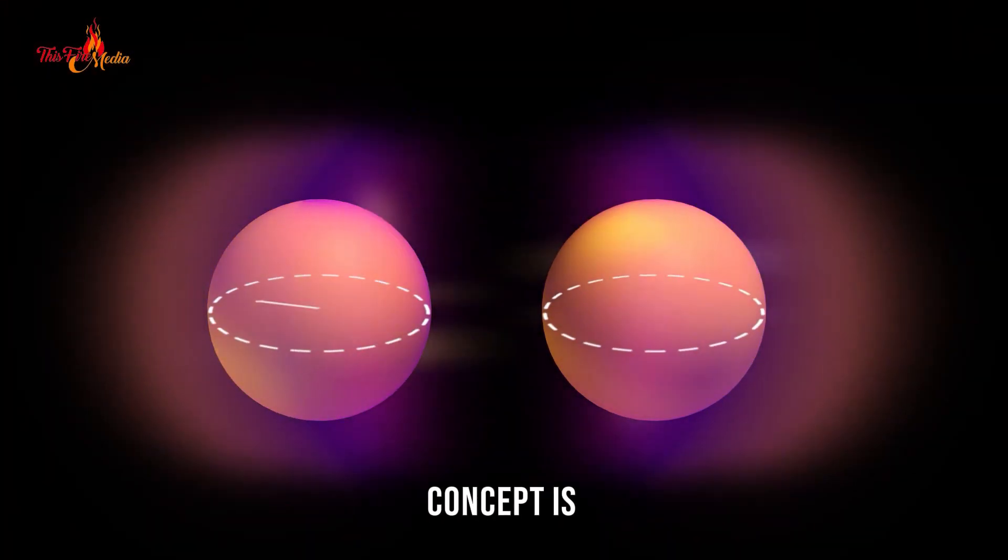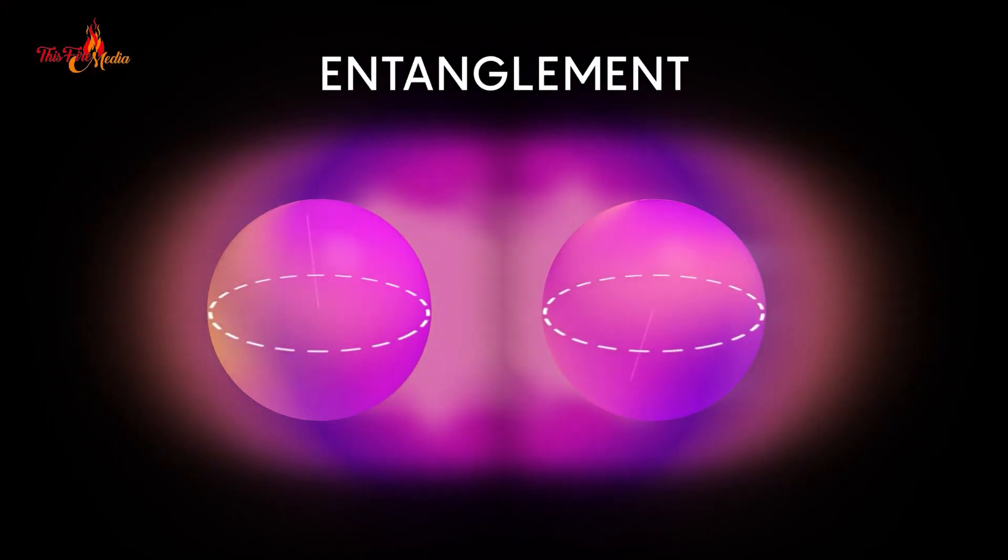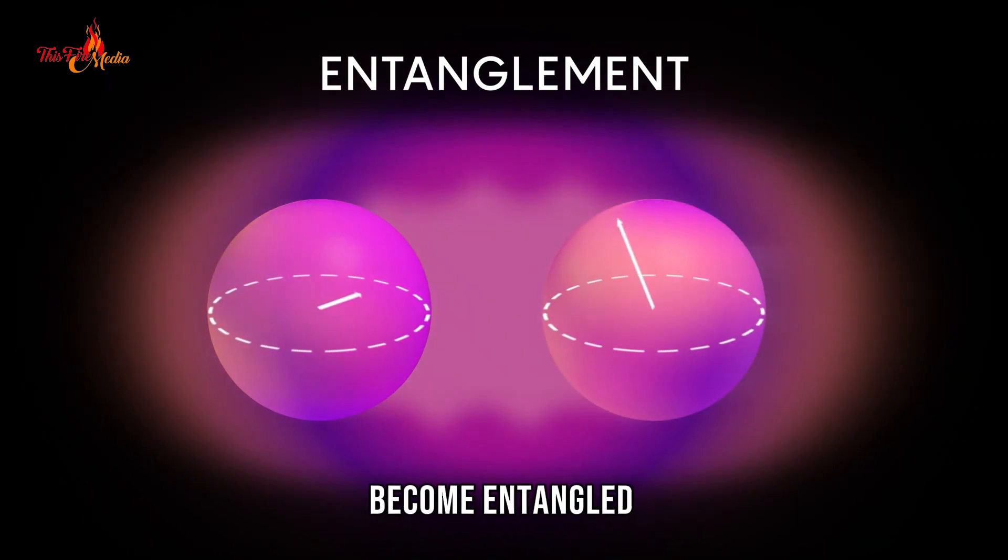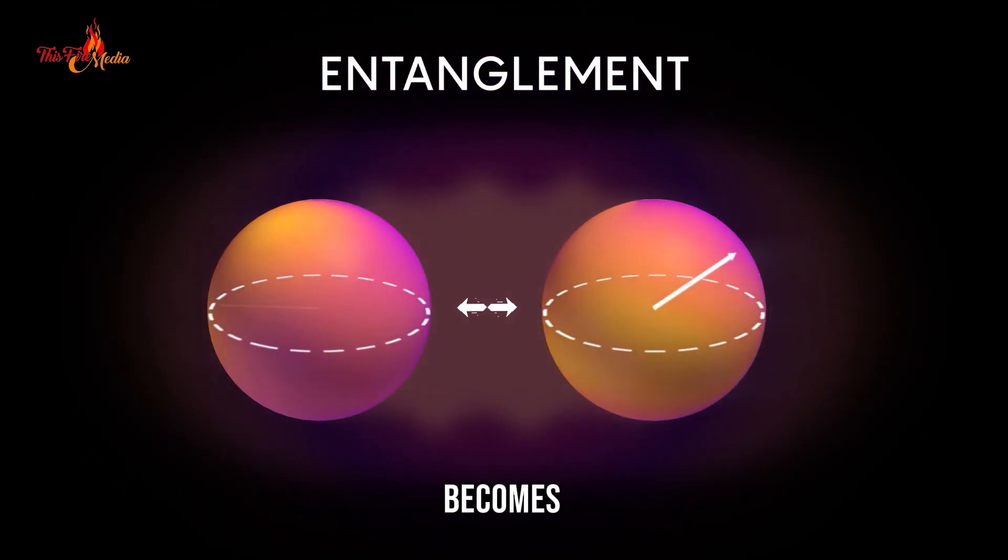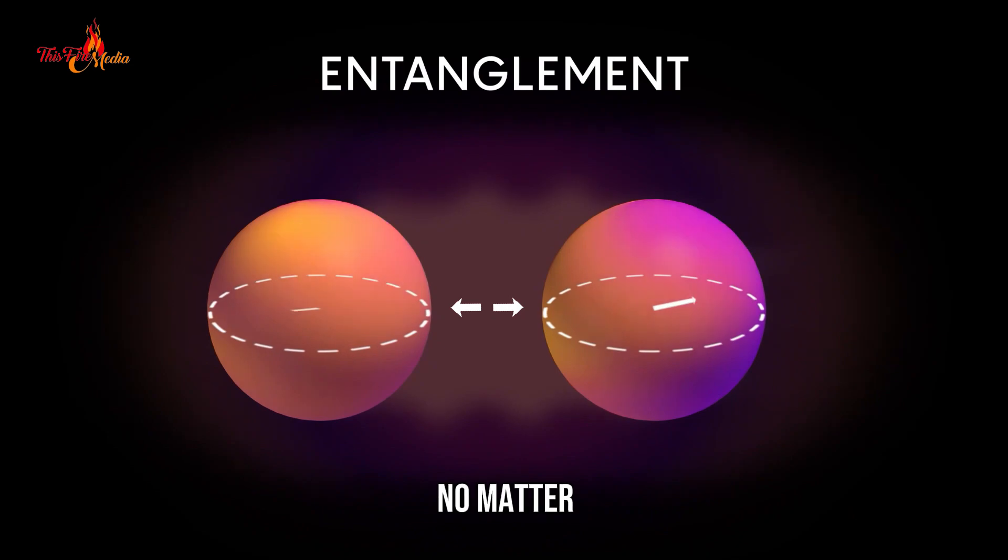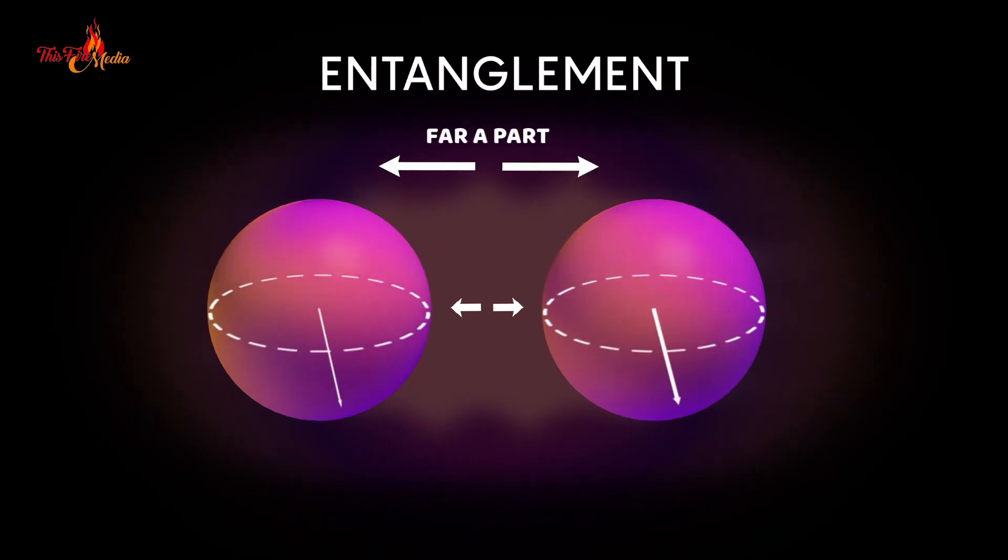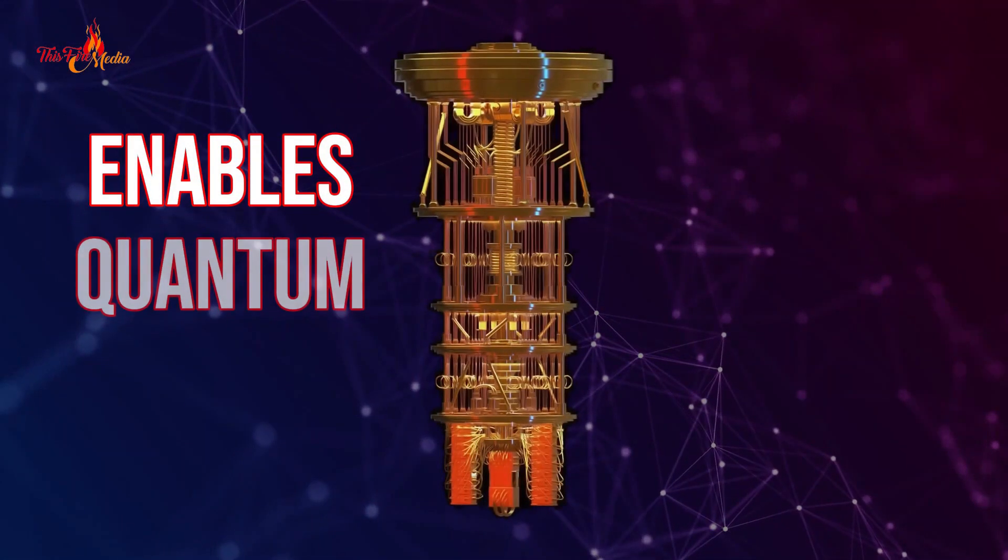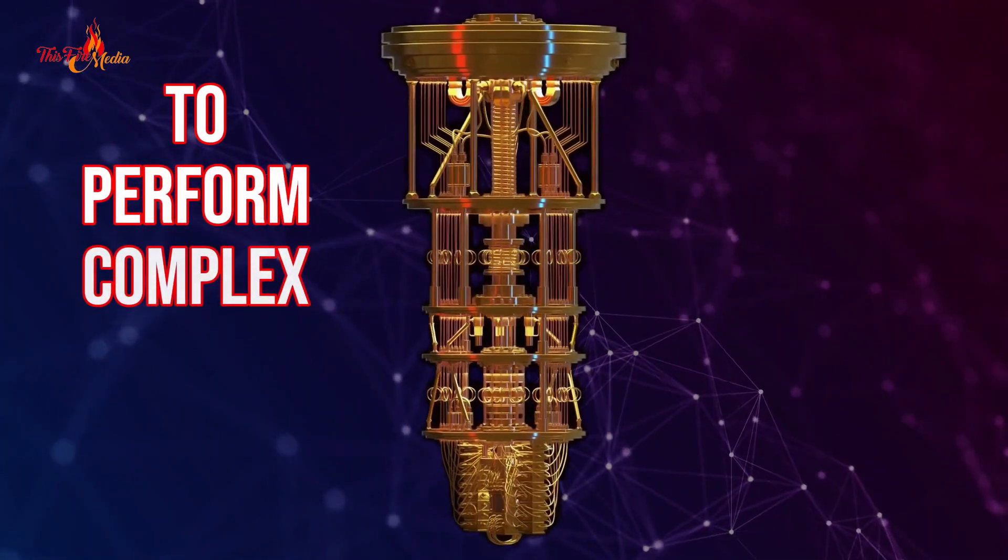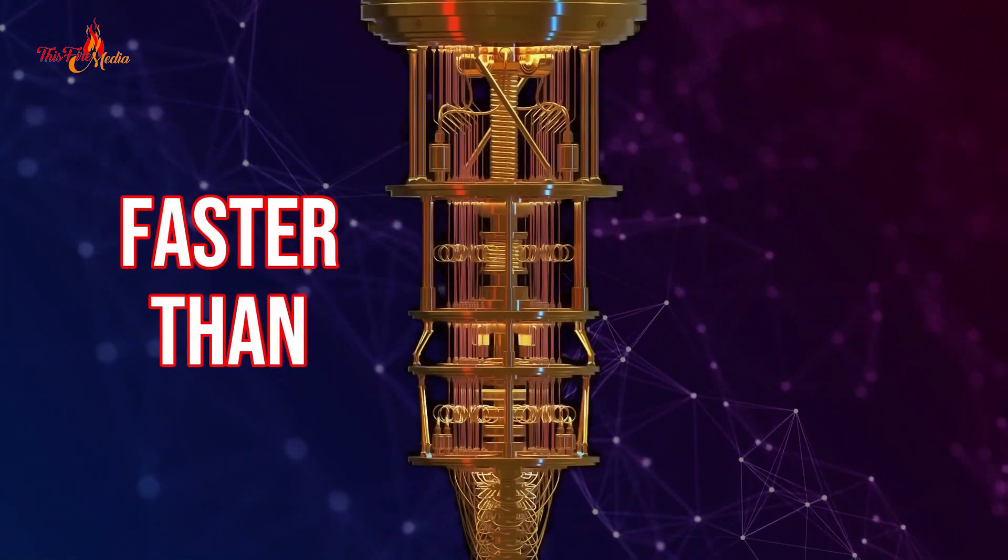Another crucial concept is quantum entanglement. When two qubits become entangled, the state of one qubit becomes dependent on the state of the other, no matter how far apart they are. This property enables quantum computers to perform complex calculations faster than classical computers.